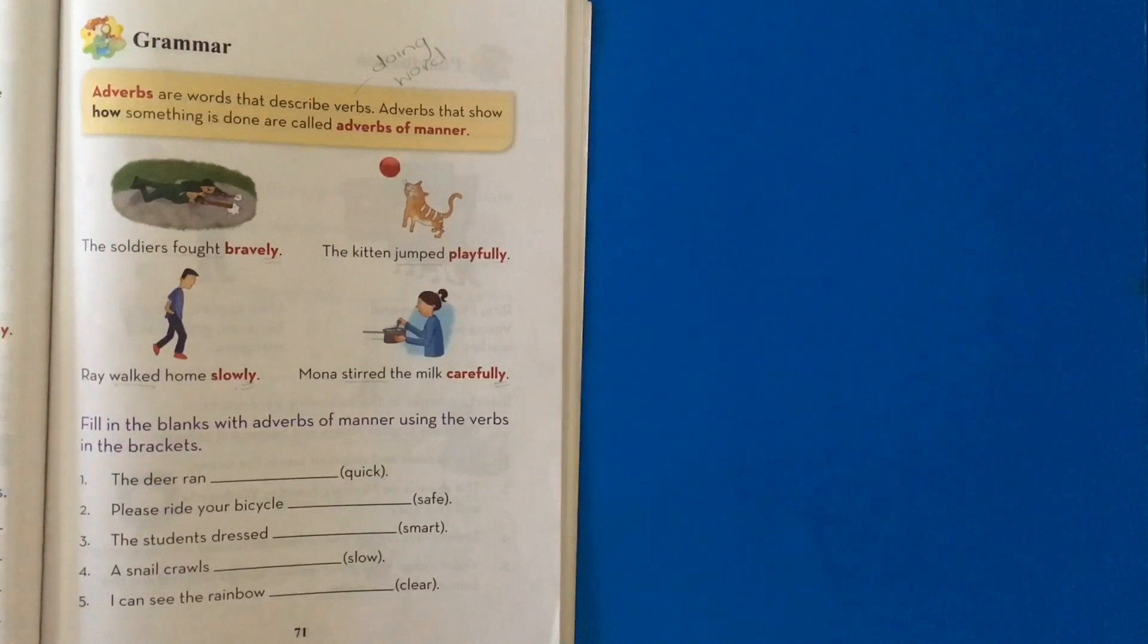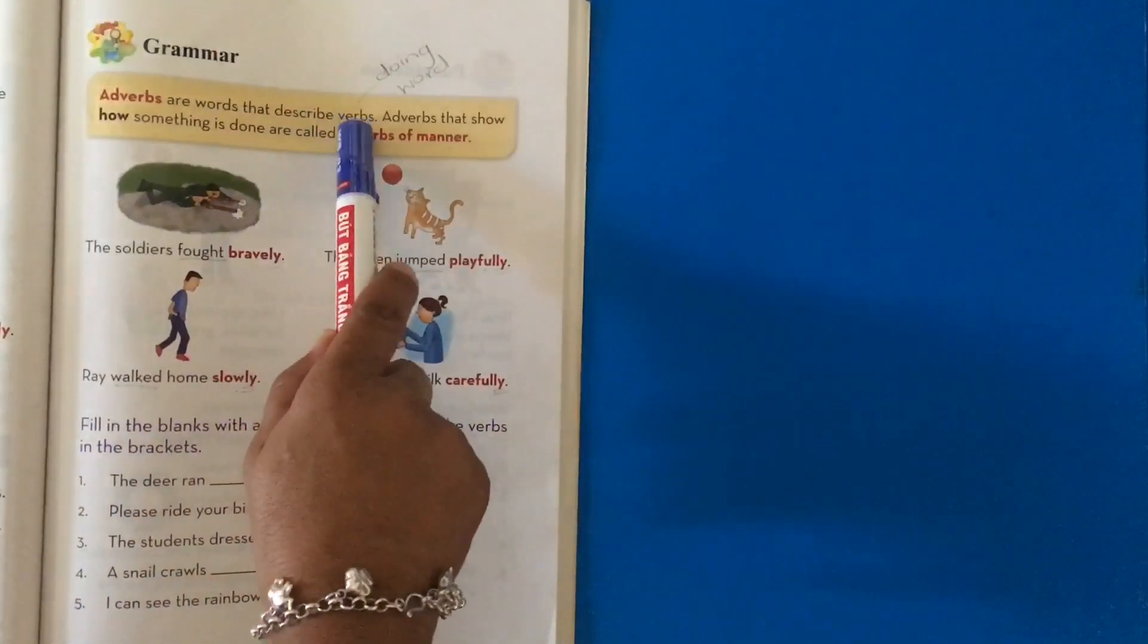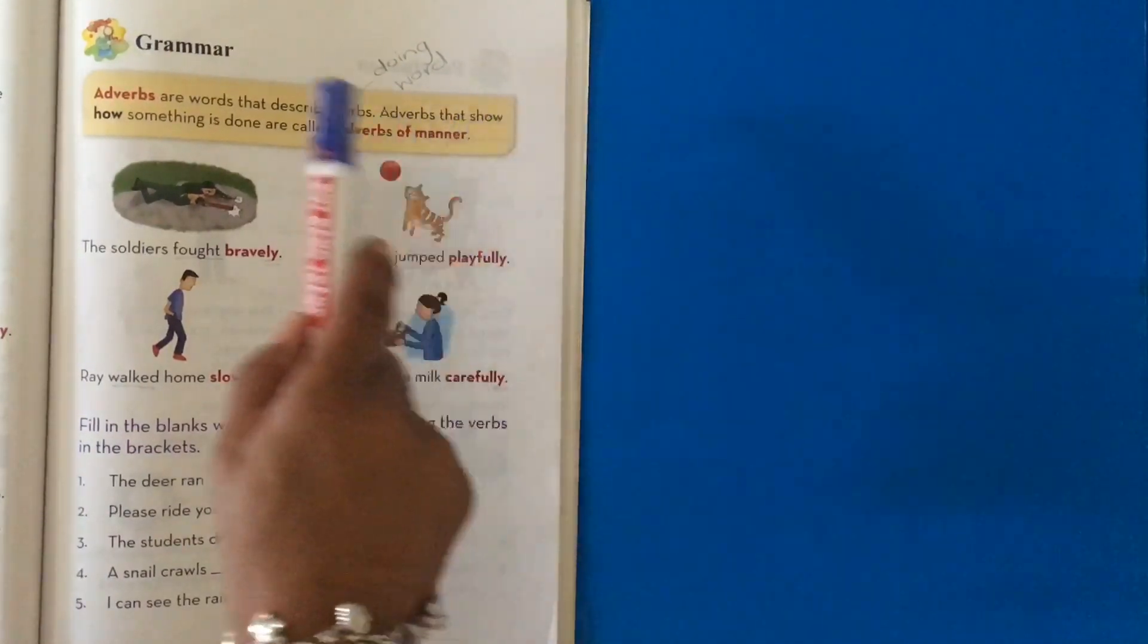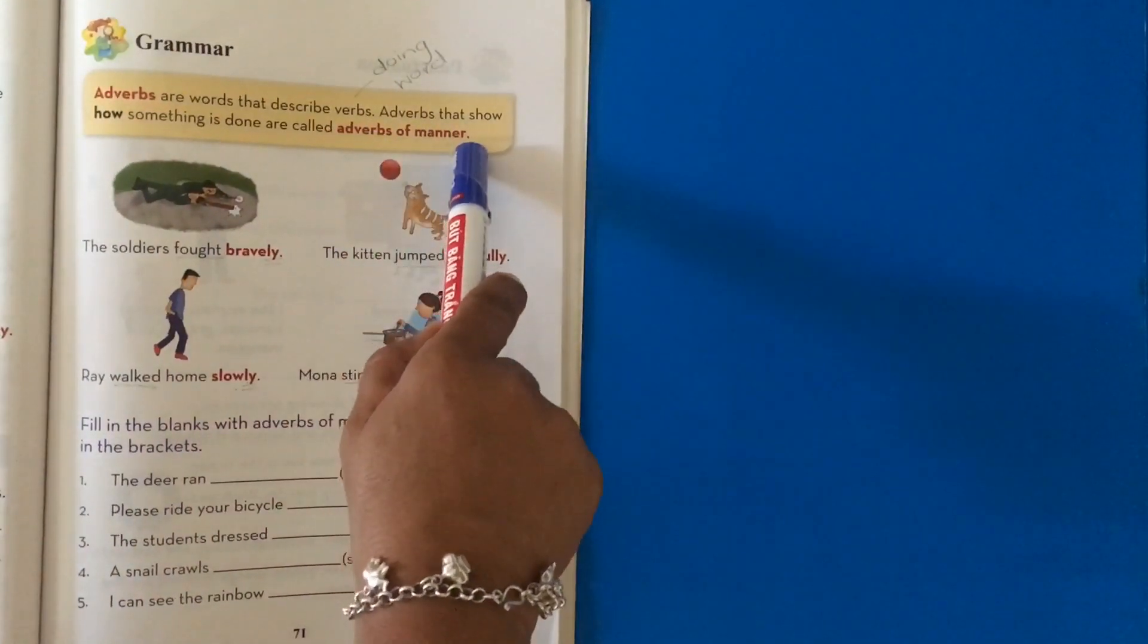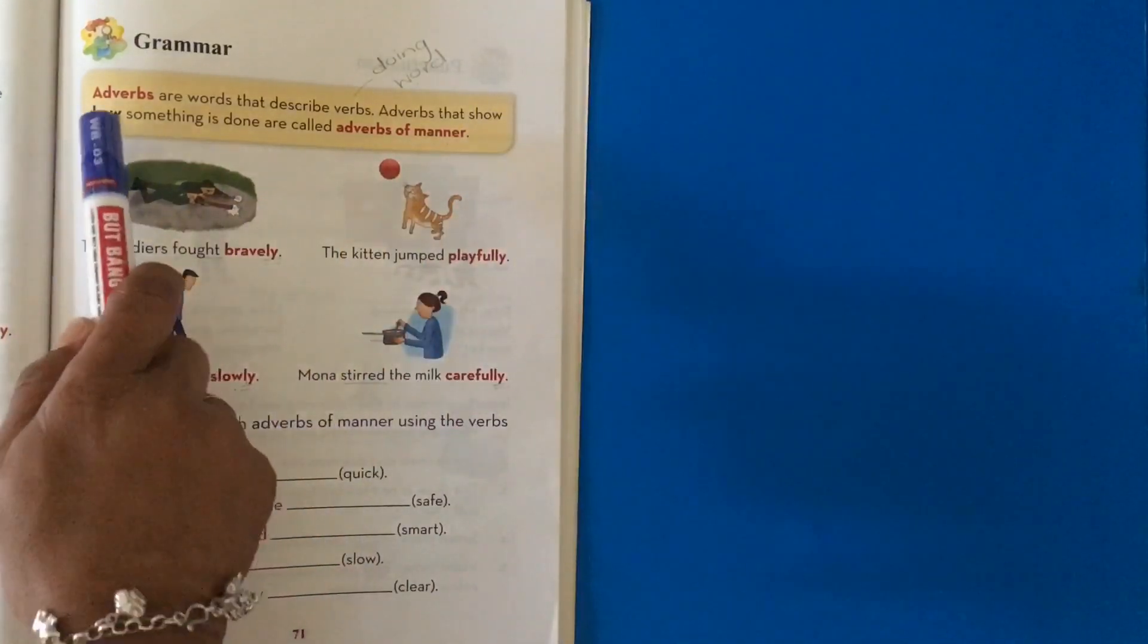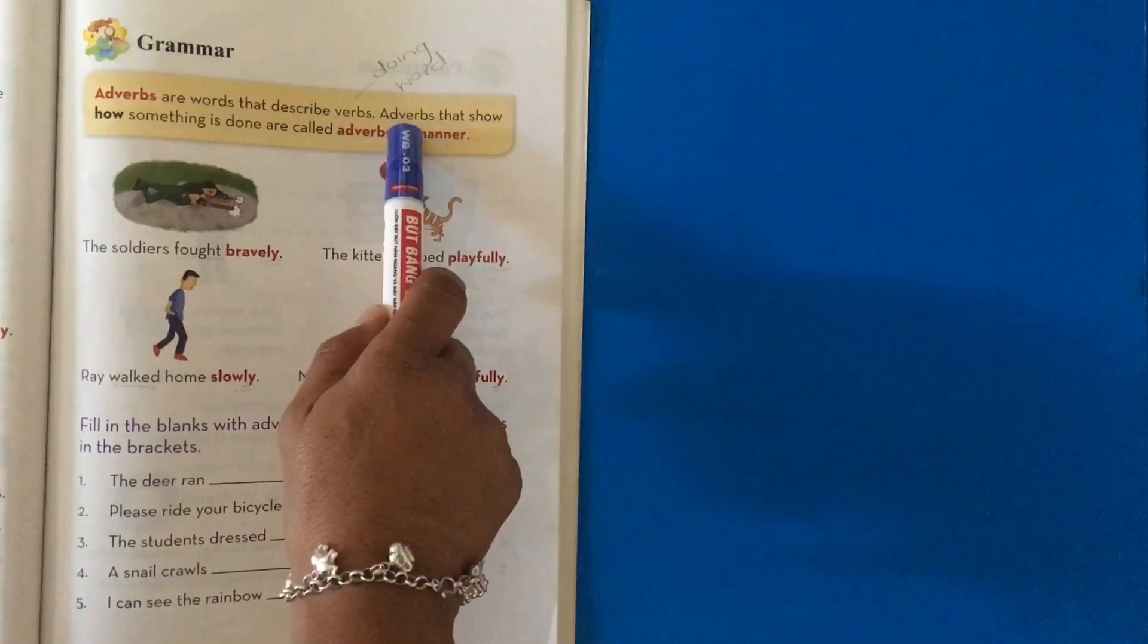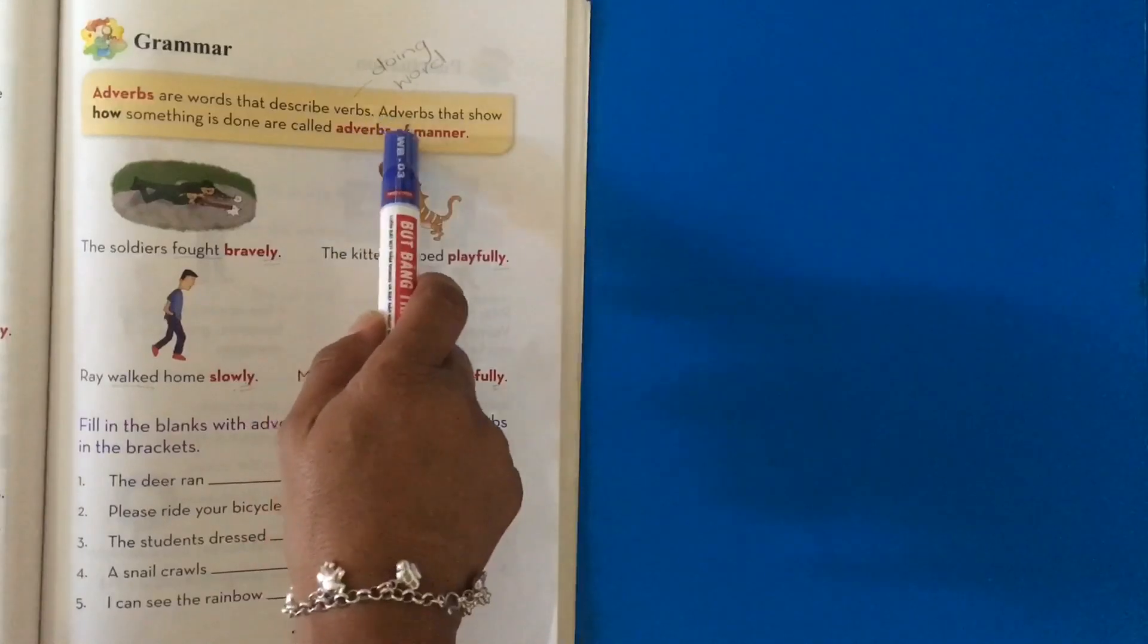So let's turn to page 71, adverbs. All together, we will read what adverbs are. Adverbs are words that describe verbs. Another word for verbs, doing words. Adverbs that show how something is done are called adverbs of manner. How something is done. Let's repeat all together. Adverbs are words that describe verbs. Adverbs that show how something is done are called adverbs of manner.